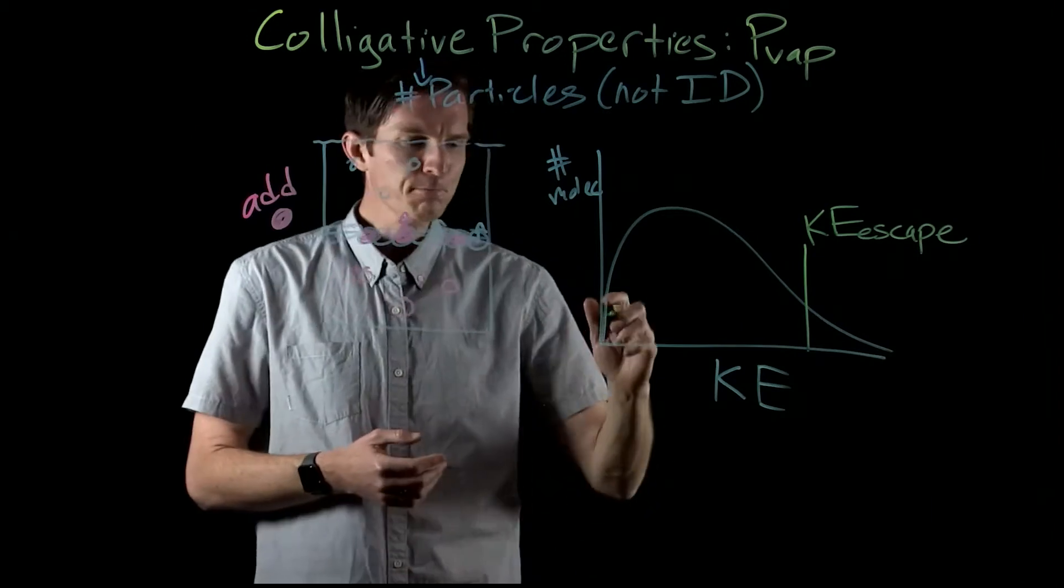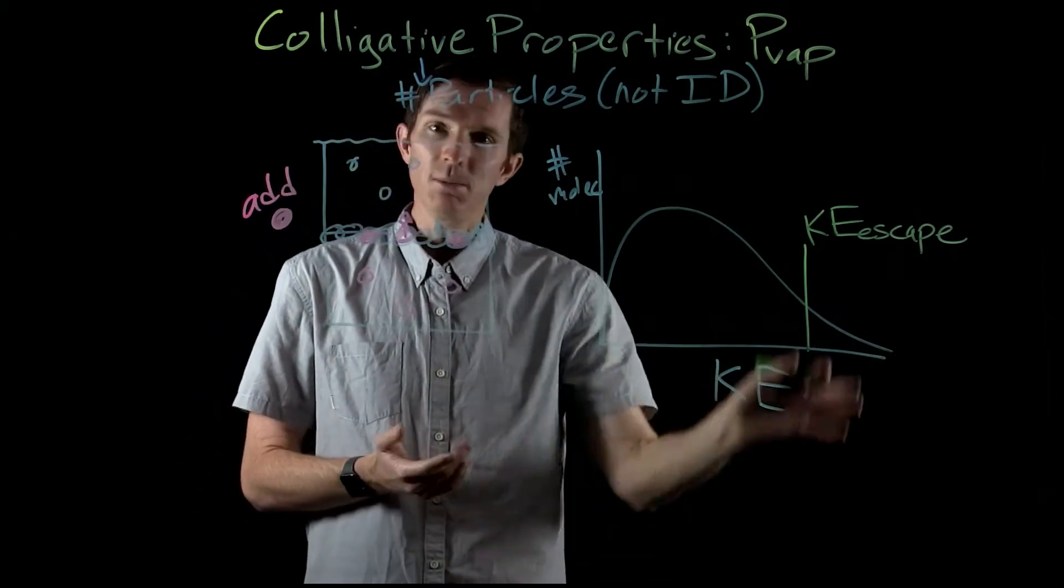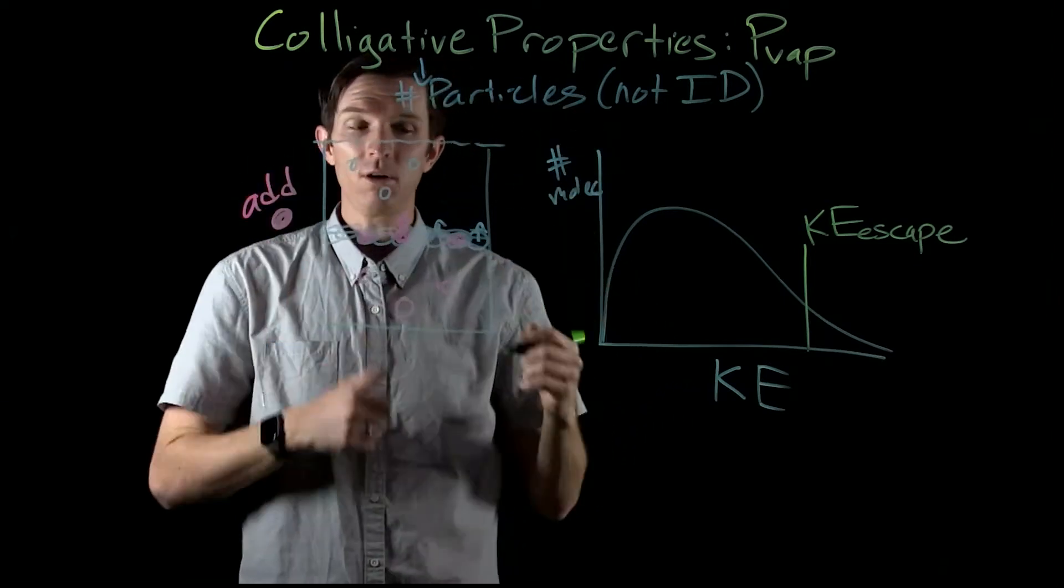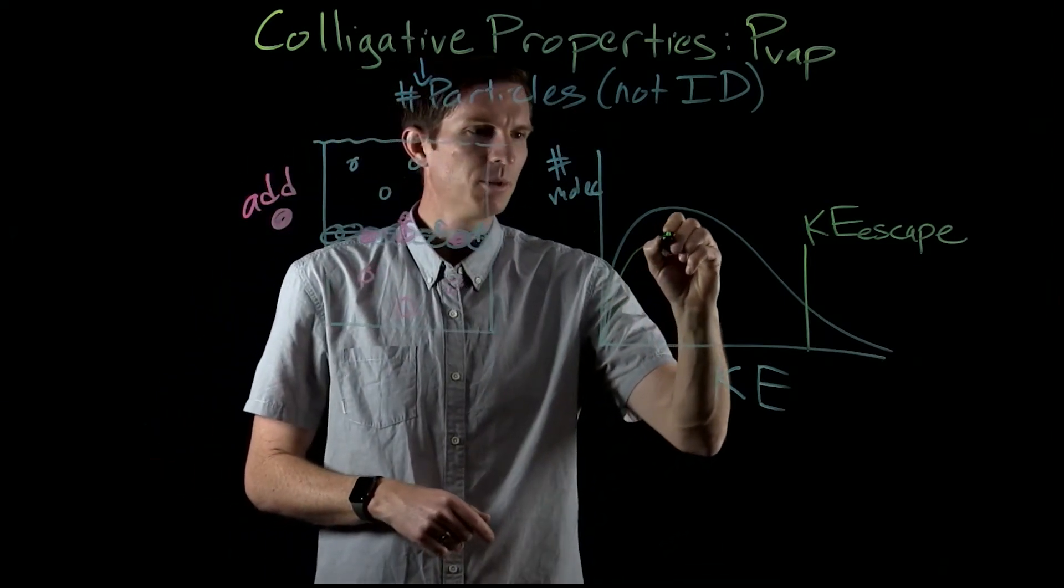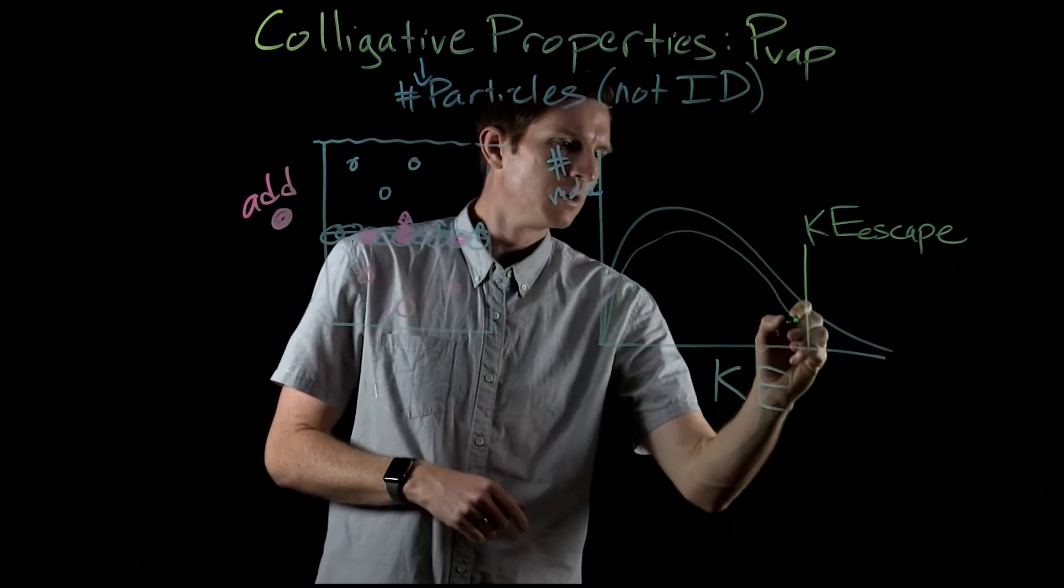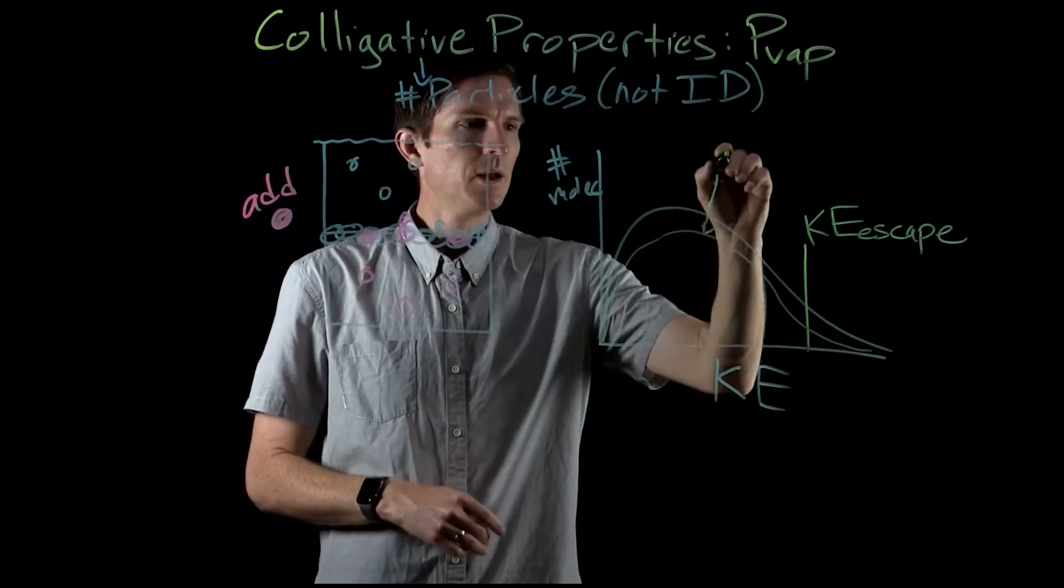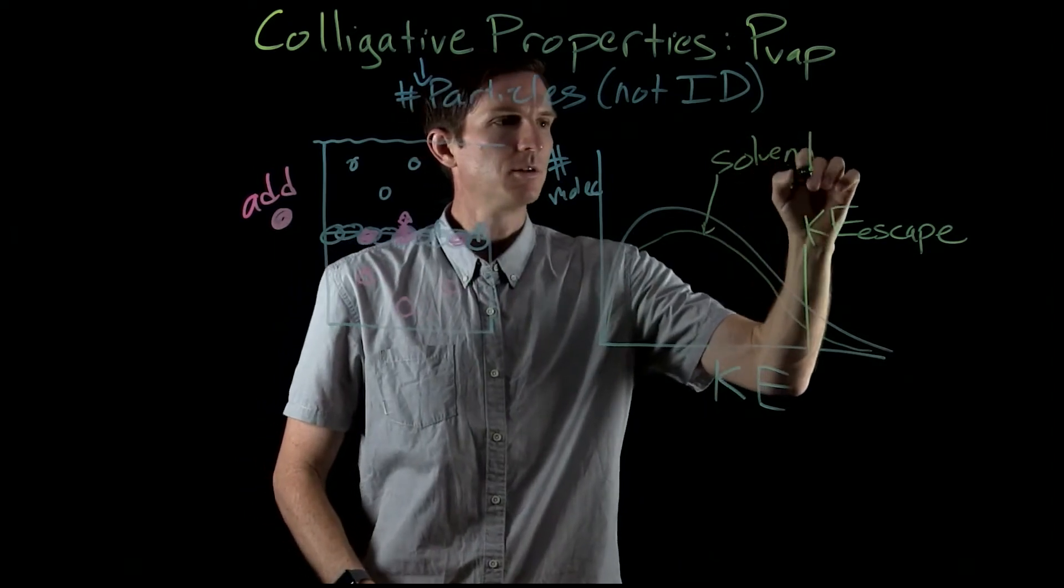So if we go ahead and look at this, let's redraw this, same temperature, but now just looking at the particles that would leave our solvent. And so if we redrew this, it's going to be a little bit lower. And the reason why it's going to be a little bit lower is because this is for the solvent.